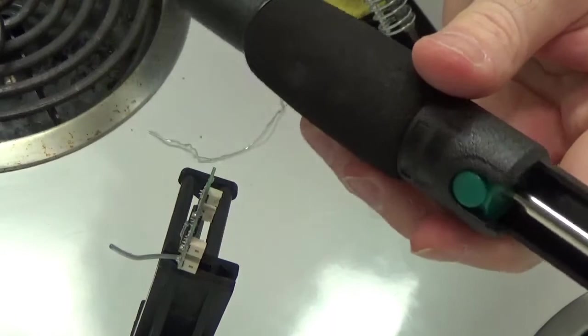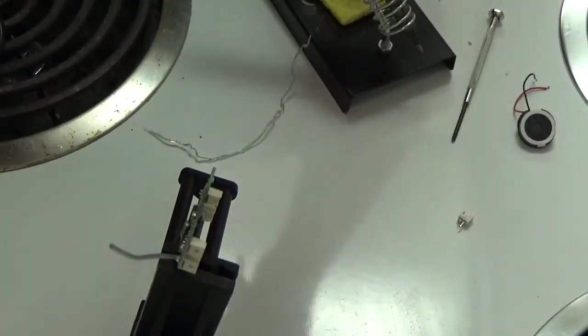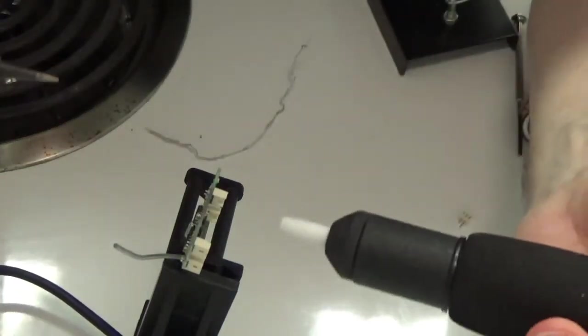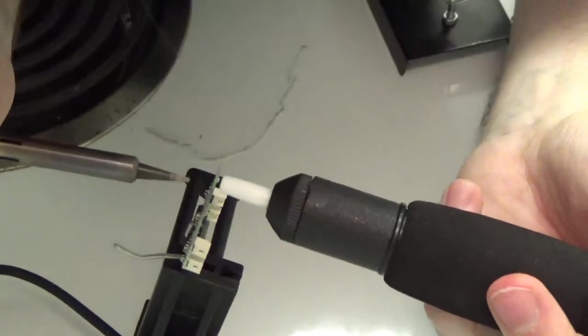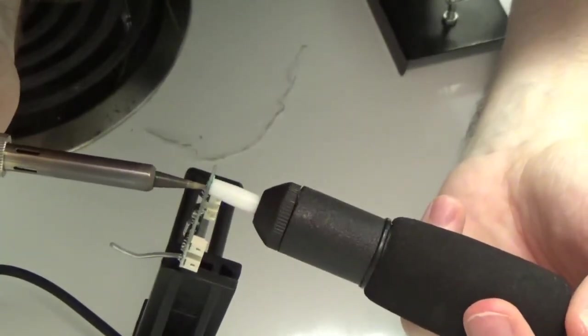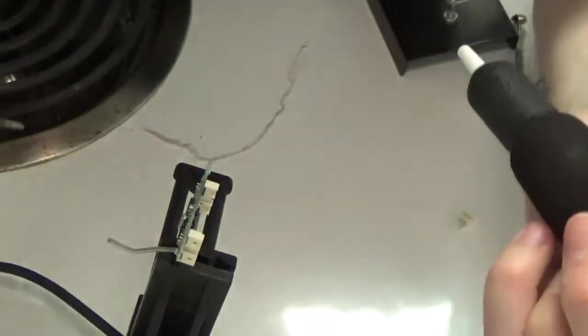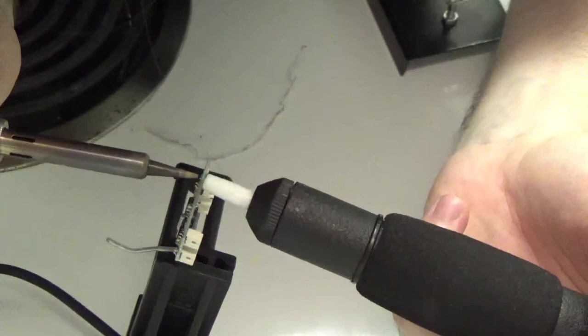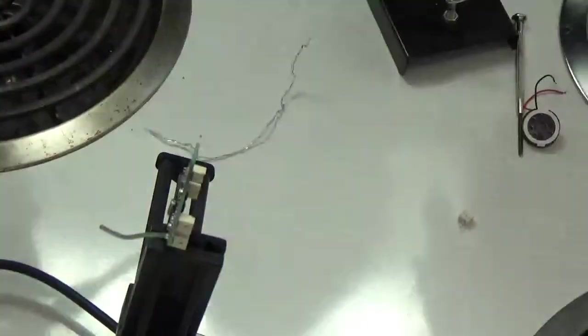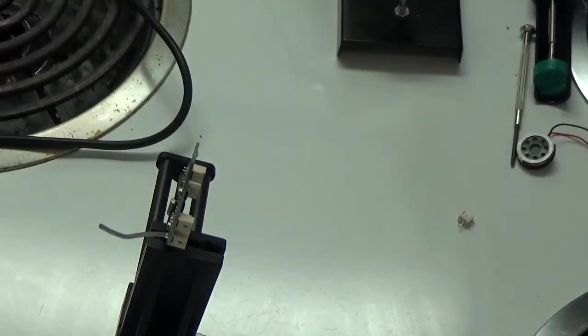Now the next thing we want to do is try to clear the solder out of that hole. We're going to use this desoldering tool. Use the desoldering tool on the side that the connector was on and try to pull it. Yeah, that seems to have done it. Do it on the other side too.